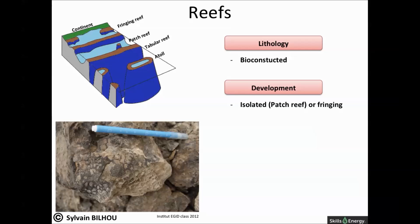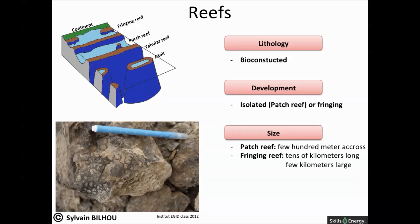At the lower end of the size range, isolated pinnacle reefs, defined as having a greater height than diameter, may be only a few hundred meters across, and patch reefs a few kilometers across. Fringing reef complexes are commonly much larger, being mainly tens of kilometers long and several kilometers wide.